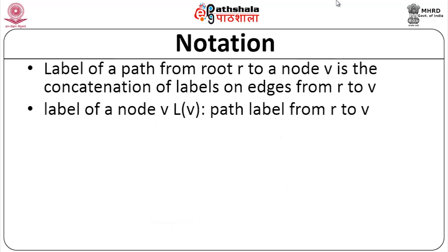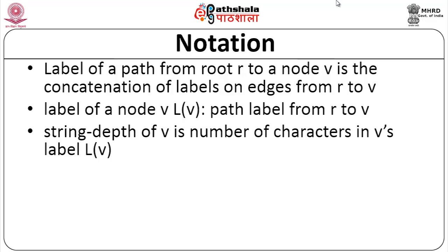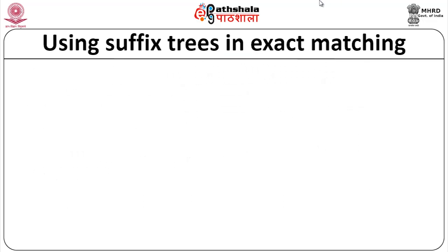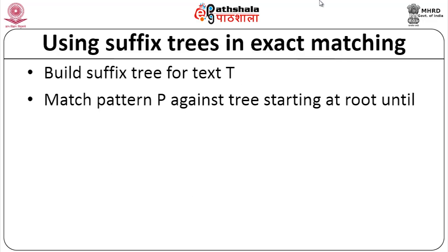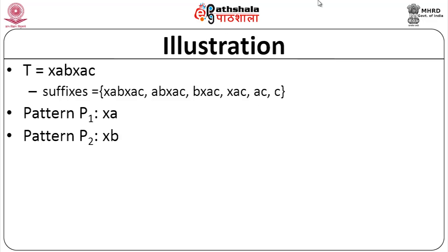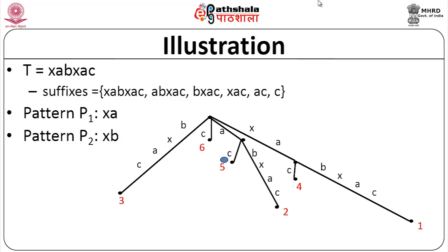To use a suffix tree for exact matching: build the suffix tree, then match pattern P against the tree starting at the root until P is completely matched. Every leaf below this match point is a starting location of P. If no match is possible, P does not occur in the text. The string depth of a node v is the number of characters in its path label from root to v.